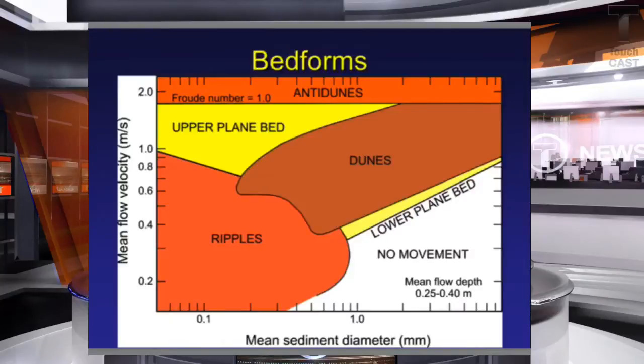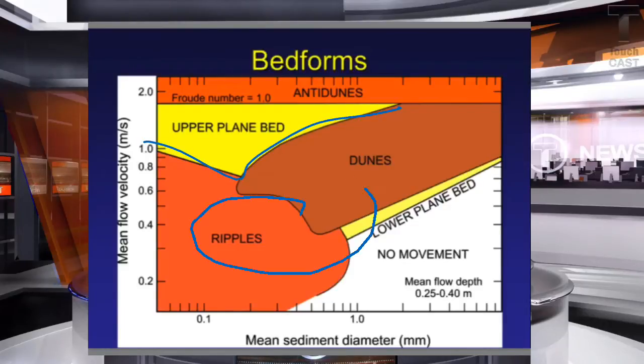Welcome back. Our next topic will be planar stratification in upper and lower flow regimes. The bed form deposition is dependent on flow velocity and grain size as depicted in the bed form stability diagram. Two general flow regimes can be characterized: namely the lower regime and the upper flow regime.